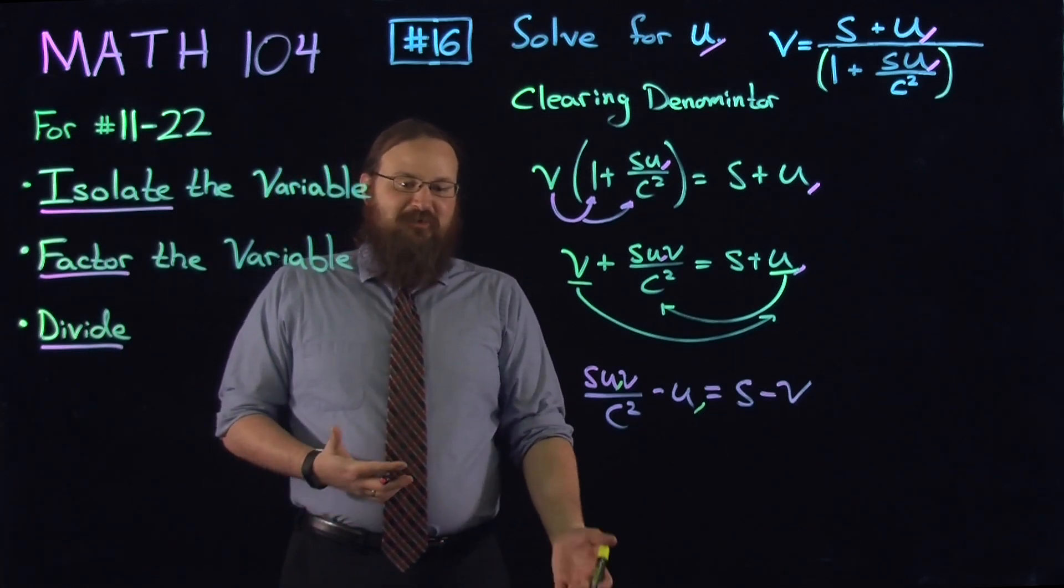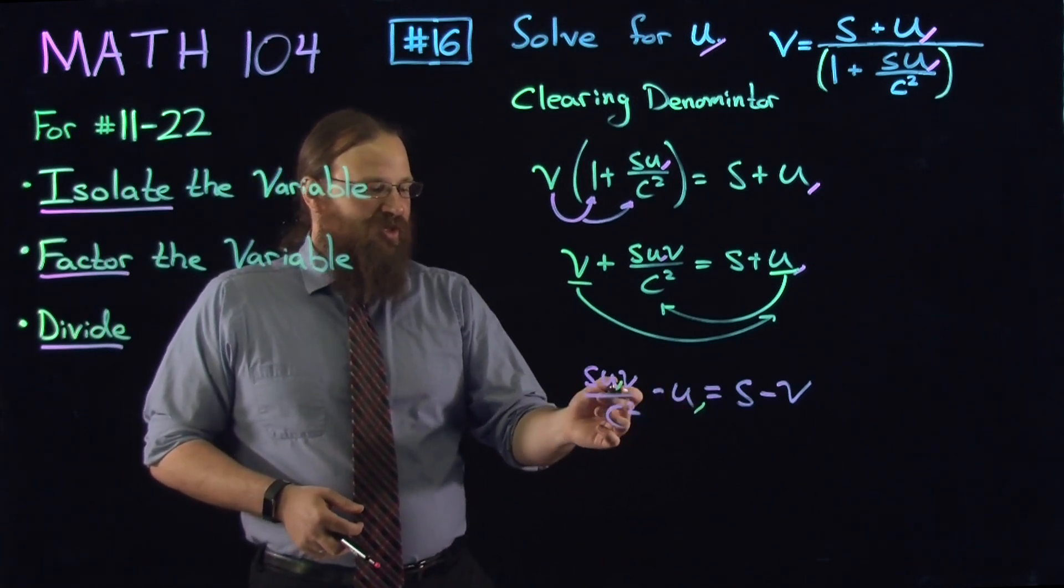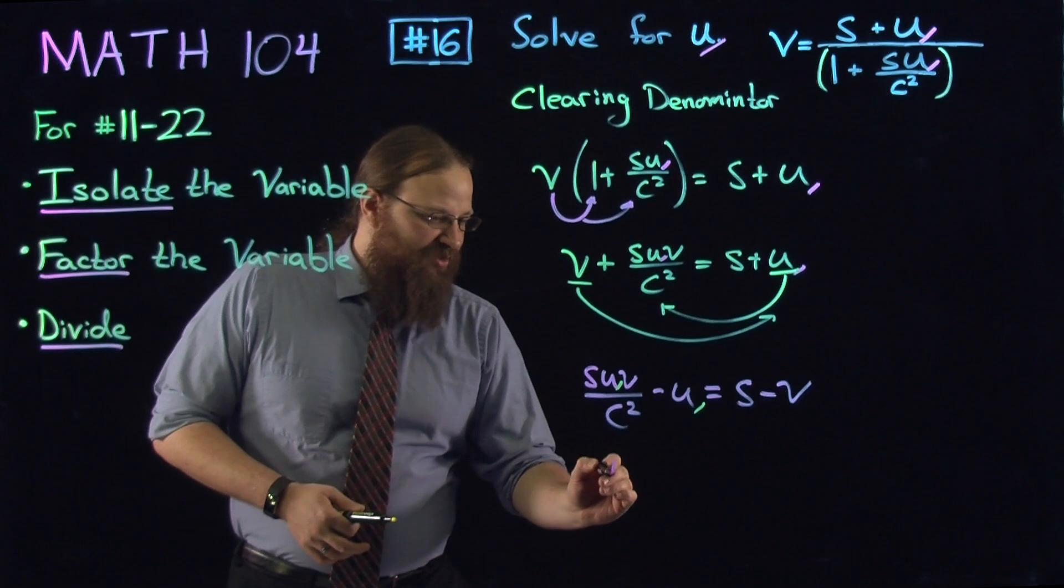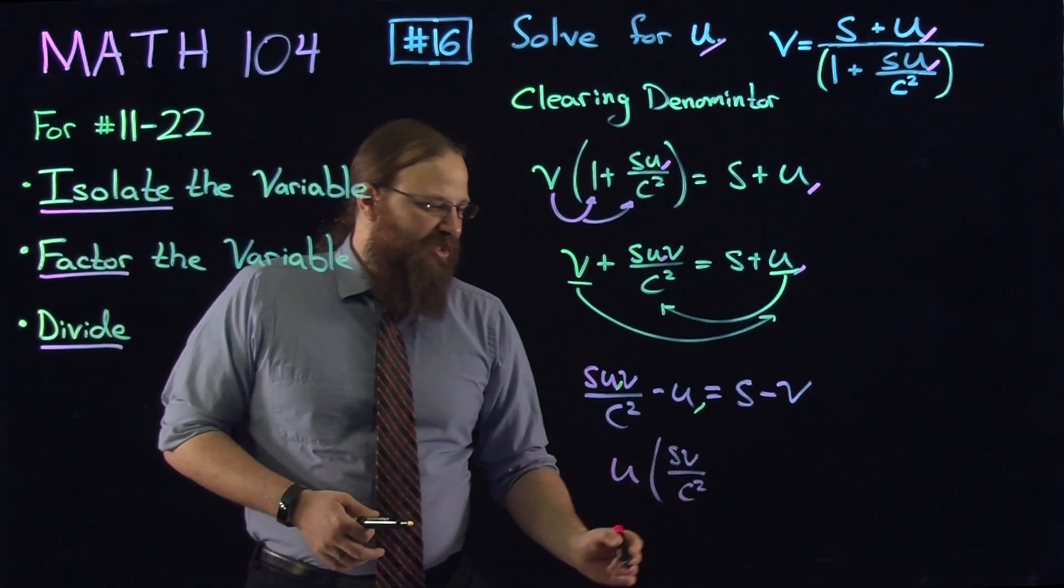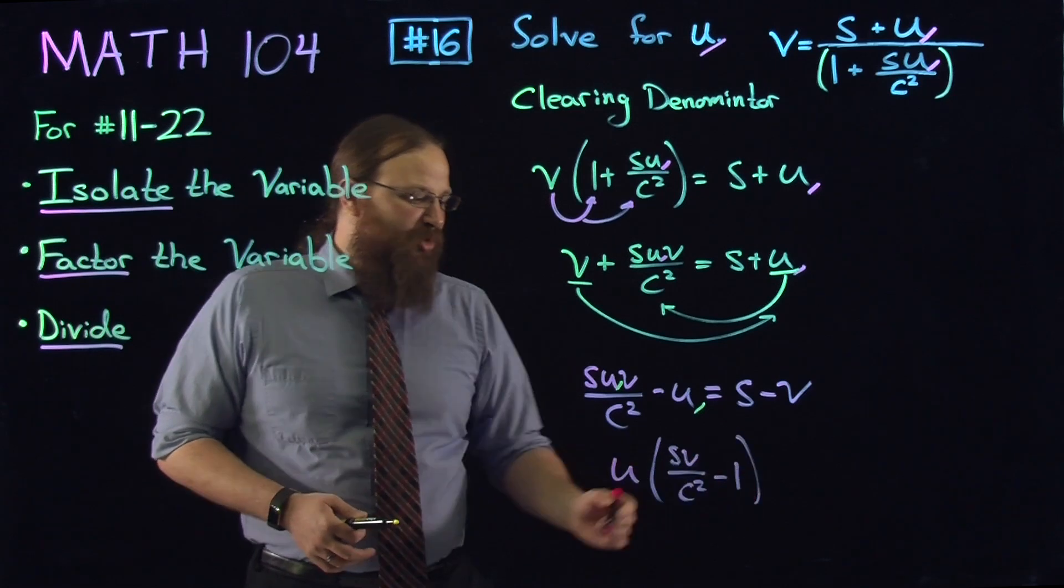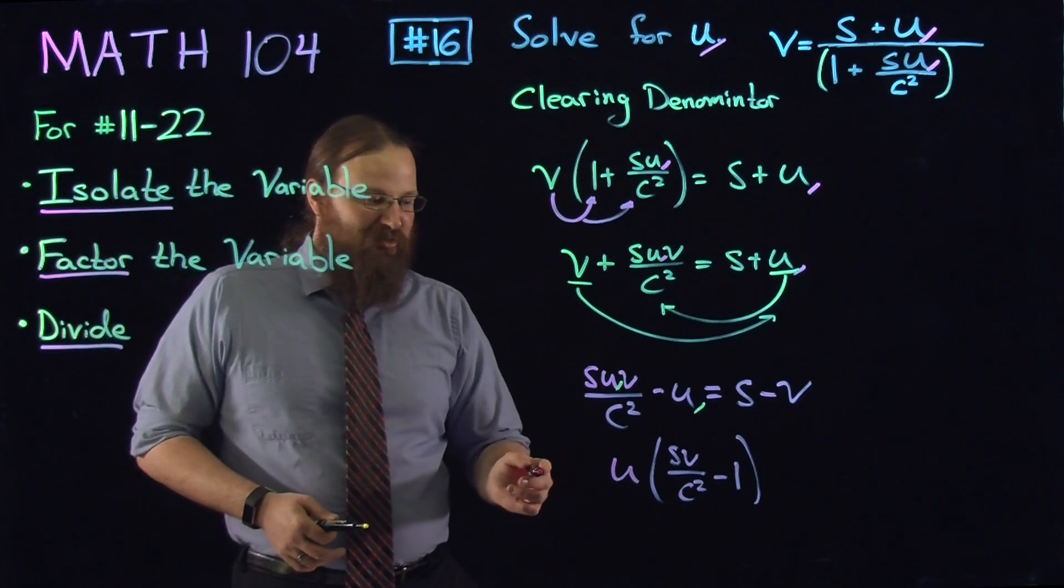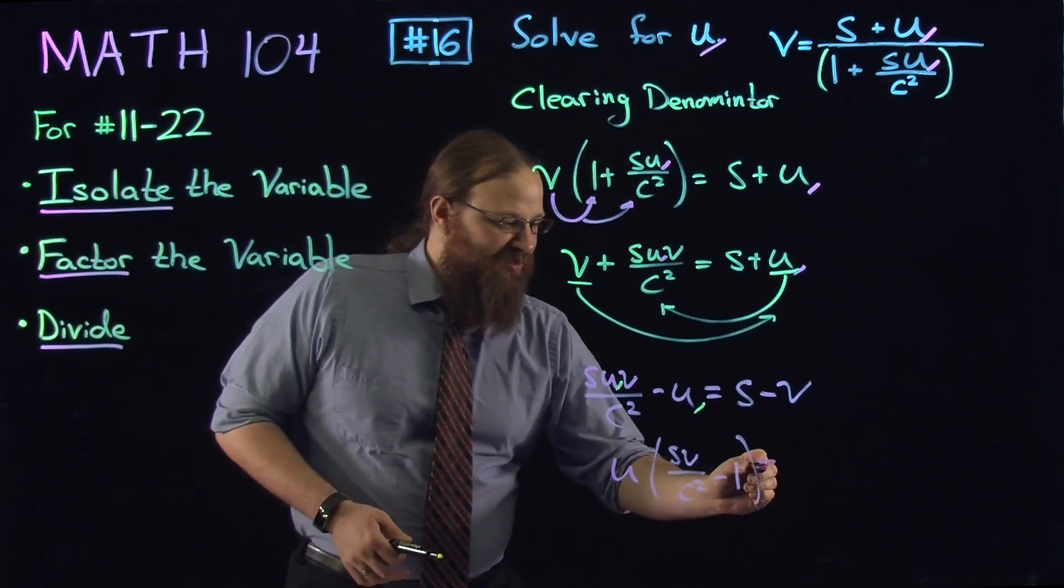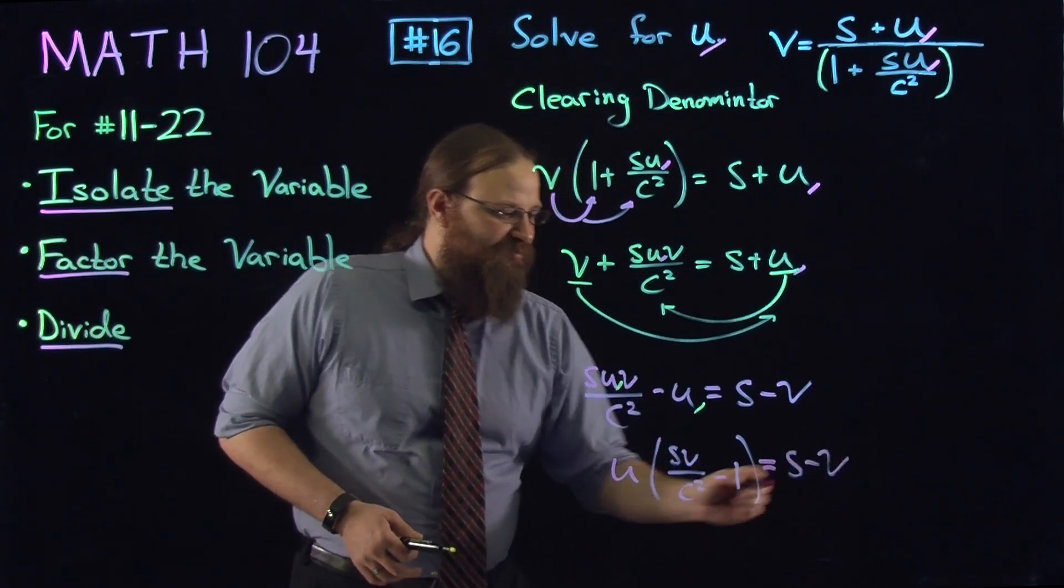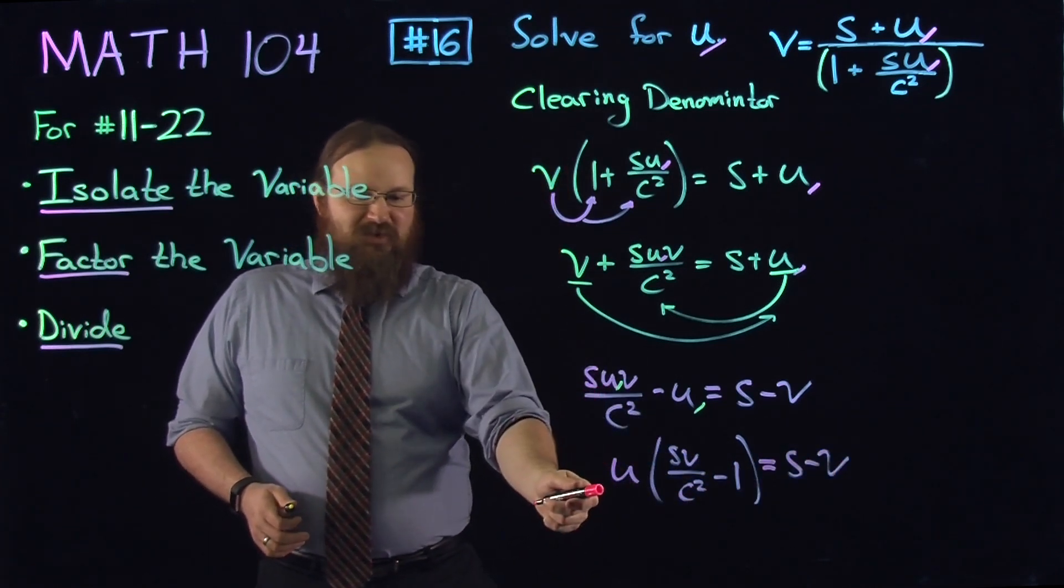So where's our variable? We have u. All the terms with u are on the left-hand side. We've finished isolating it. Now we have to factor. We're going to factor the u off the left-hand side, leaving us with u times sv over c squared minus 1. It's important to put minus 1 here. When you remove the entire u, because we're dealing with multiplication, we're left with the identity 1. On the right-hand side, we have s minus v.